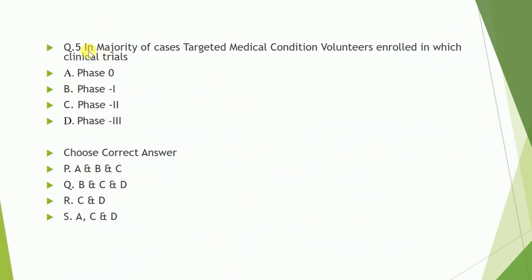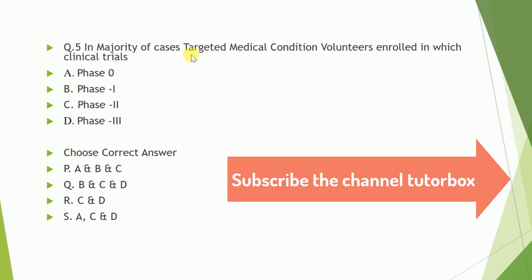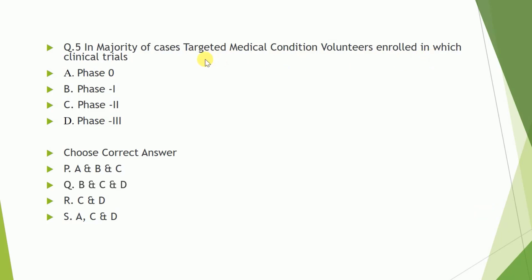Question number five: in majority of cases, safety is measured in which clinical trial? The correct answer of this question is C and D — phase two and phase three.